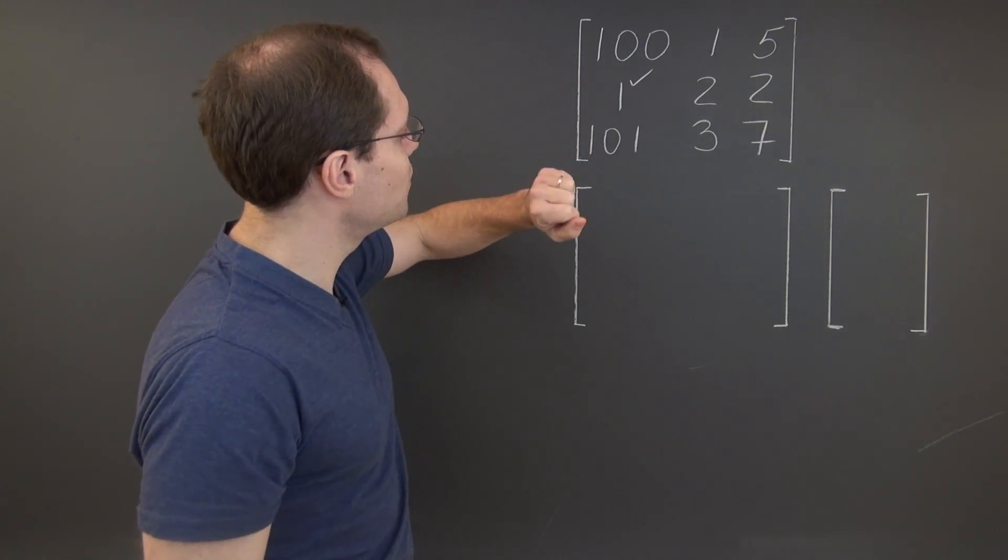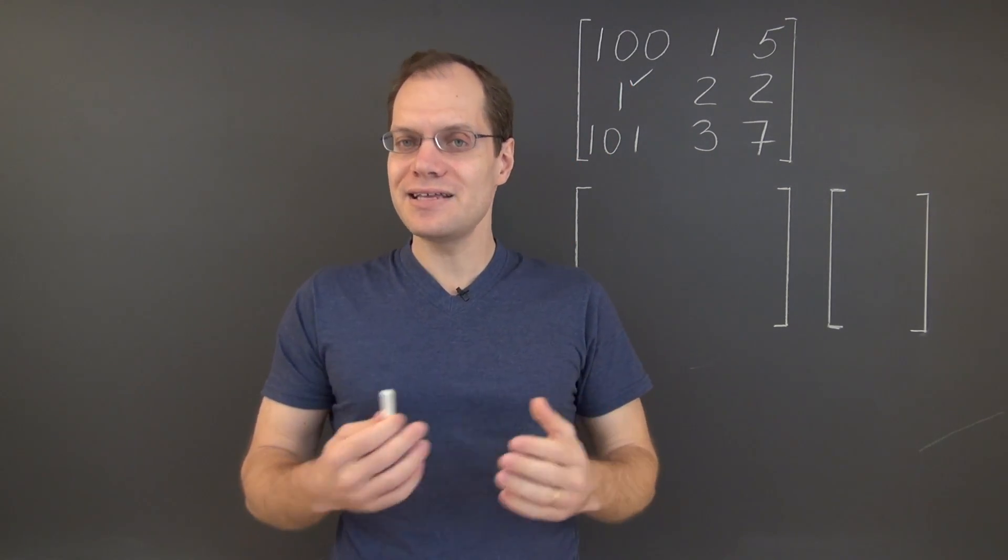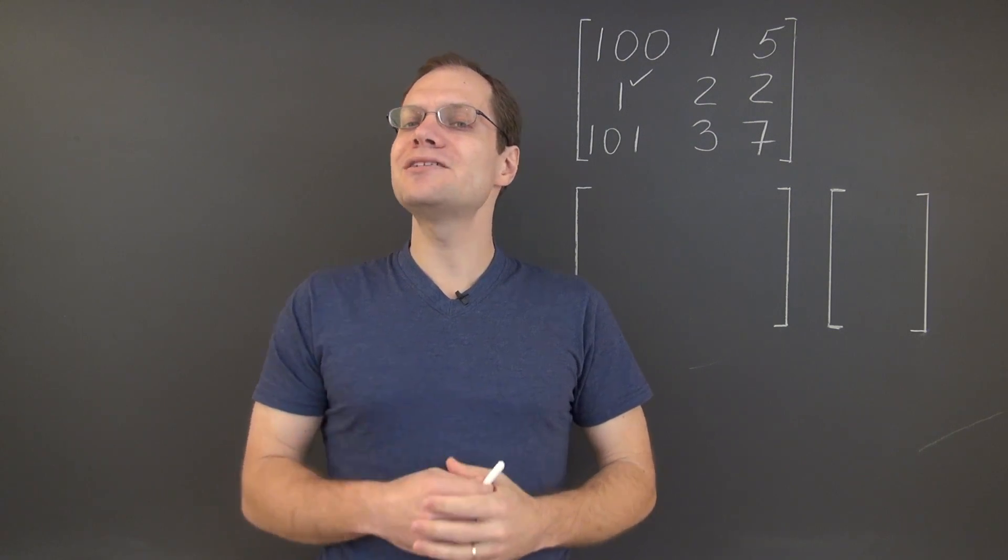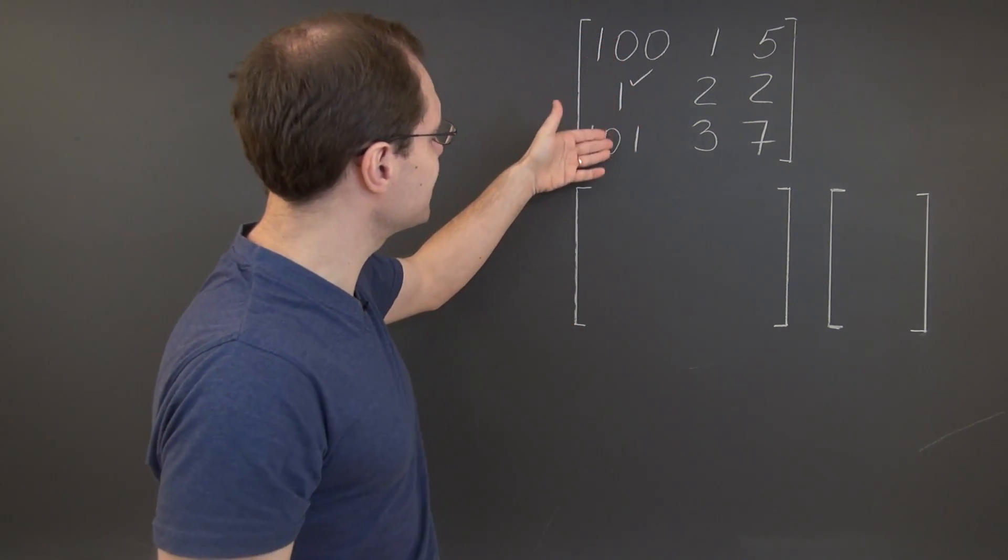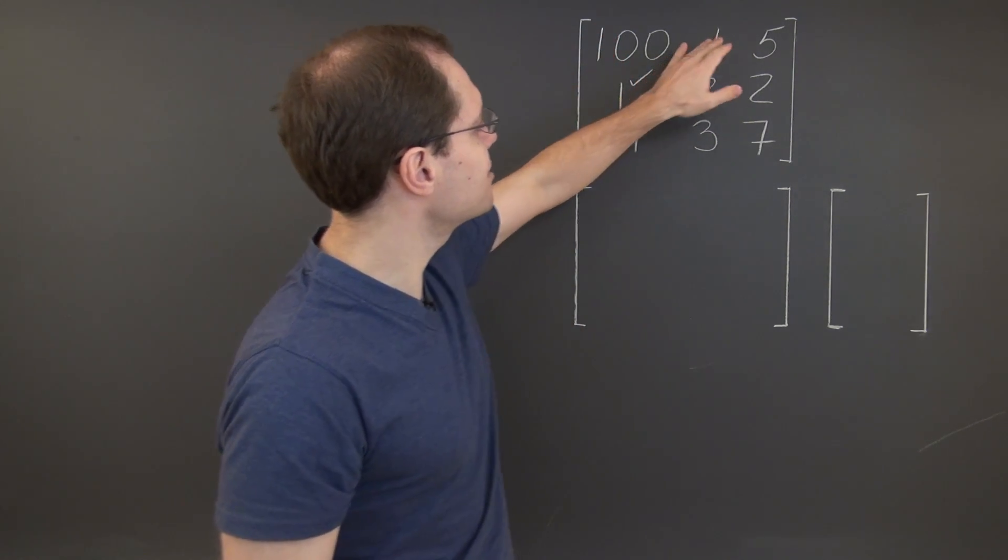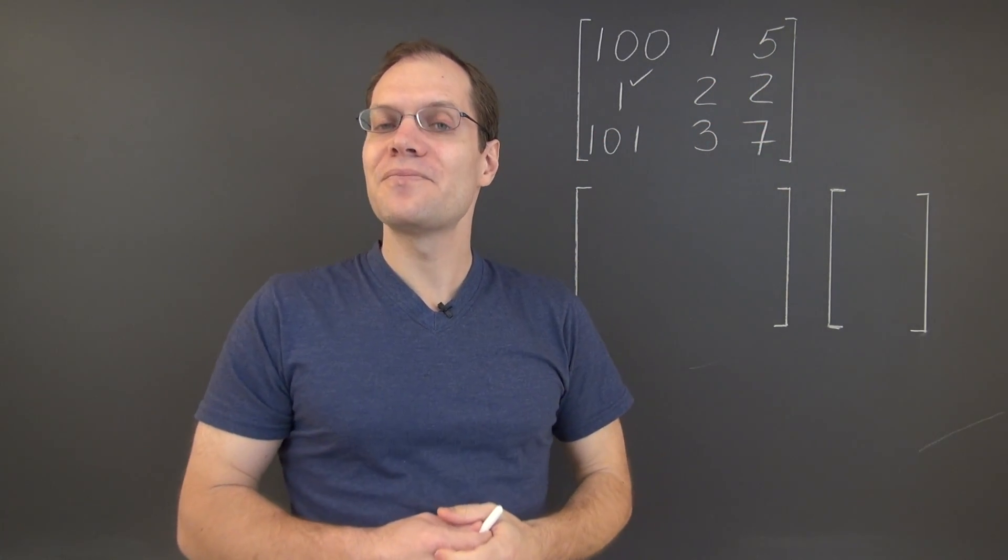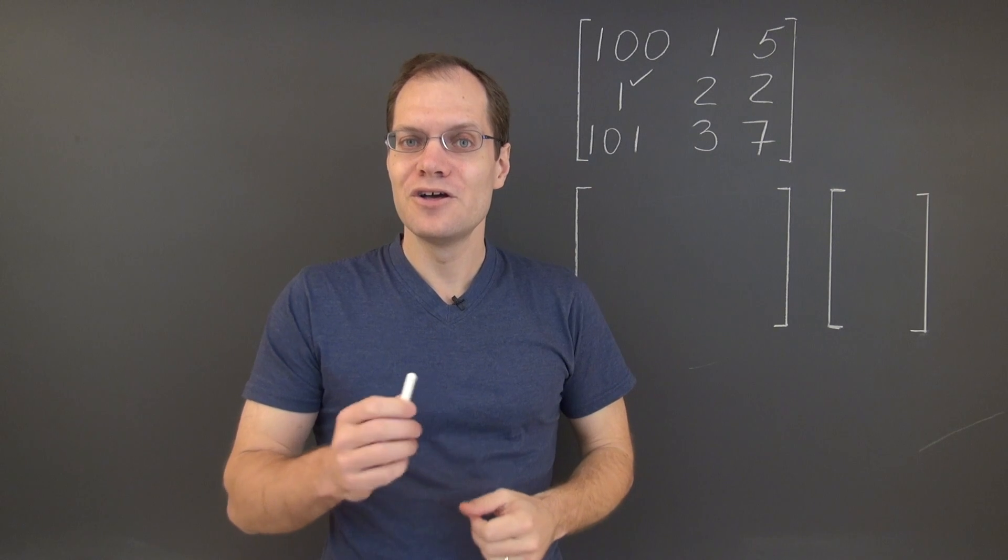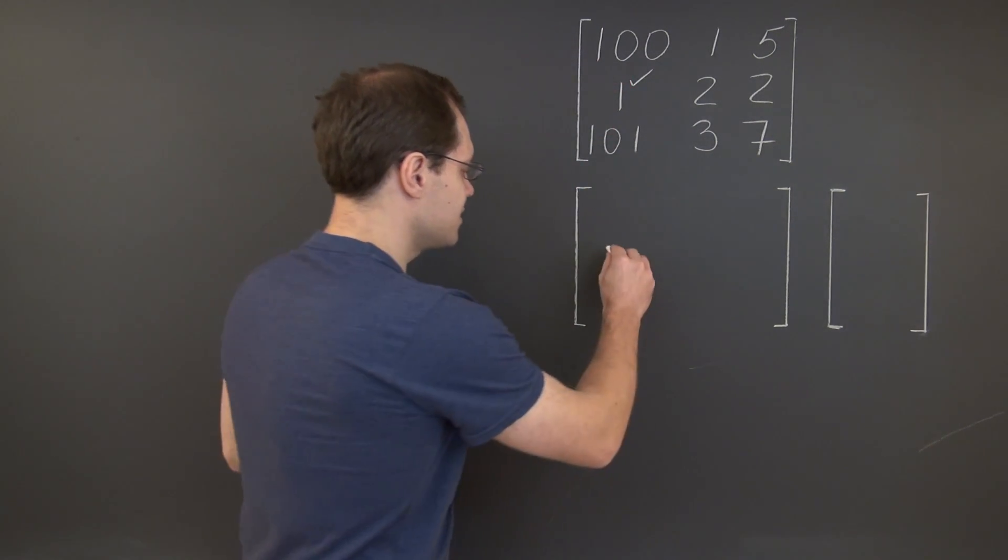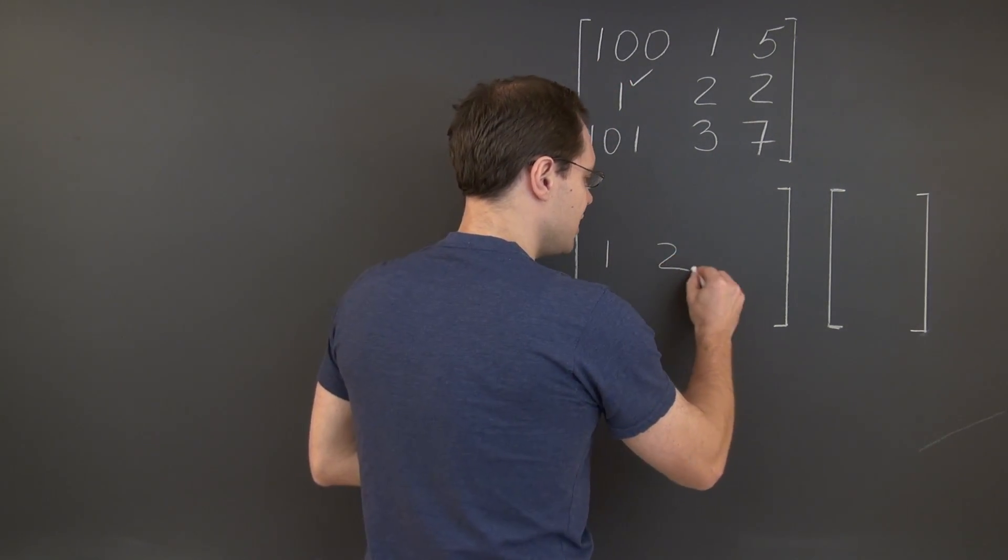I will use this one as my pivot because it is conveniently in the first column and because it will help us eliminate the largest numbers in the matrix. Of course it will create four other large numbers. But as you will see, that won't be a problem. So here we go, because this one is in the second row, the second row will remain unchanged.